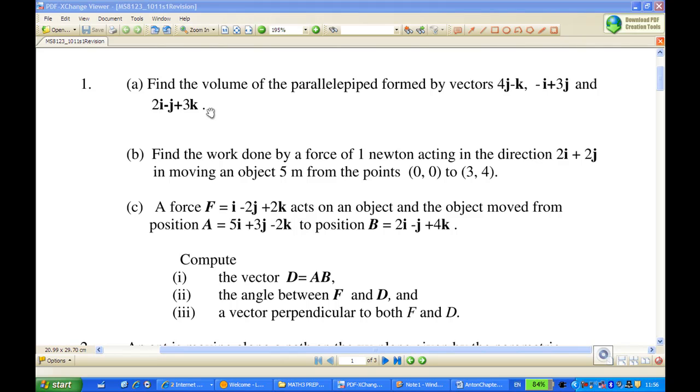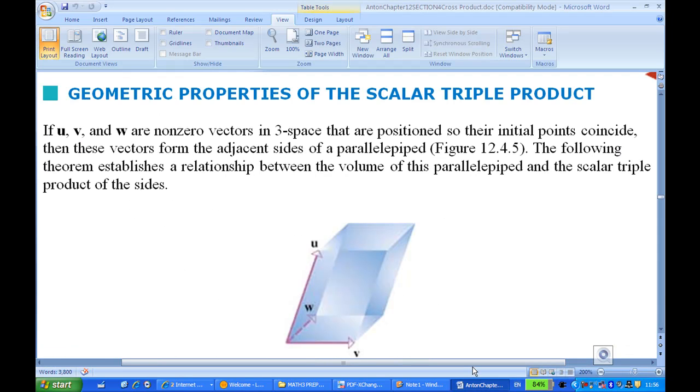For this, I'm going to refer to Howard Anton chapter 12 section 4 on the cross product. It gives you geometric properties of the scalar triple product. Say if you have u, v, w as nonzero vectors in three-dimensional space, then you can form the parallelepiped as shown in this case.